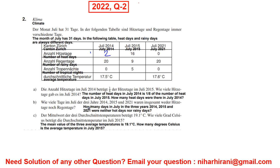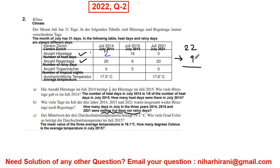Let us go with B. How many days in July across the three years 2014, 2015, and 2021 were neither hot days nor rainy days? For July 2014, I will add heat days and rainy days: that gives 22. July has 31 days, so 31 minus 22 equals 9 days that are neither heat days nor rainy.